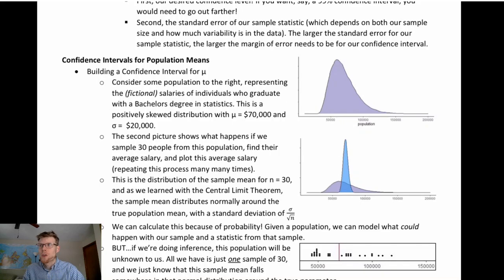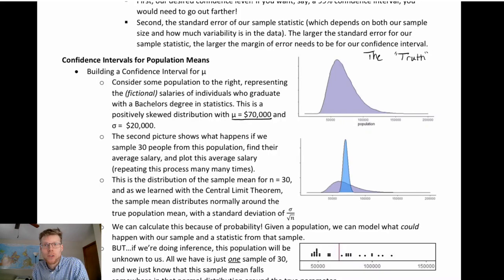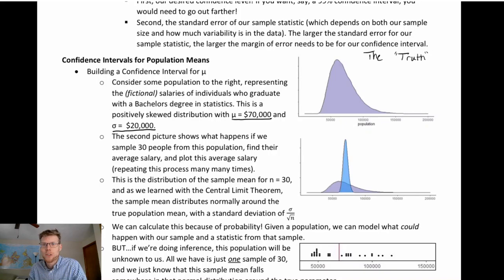Let's focus on confidence intervals for population means. Consider this fictional distribution representing the salaries of individuals who graduate with a bachelor's degree in statistics — it's just made up to represent our population for this problem. There exists a true parameter: a true mean of mu equals $70,000 and a true standard deviation of sigma equals $20,000. But if we're doing inference, we're not going to know this information. We know that this exists, but we don't know what it is, and we want to make claims about what could be true.